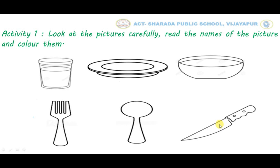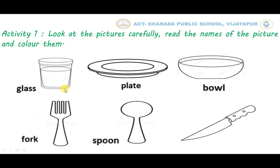Now tell me kids, what are the things we can see here? Yes kids, you are right. Here we can see a glass, plate, bowl, fork, spoon, and knife. In this activity you have to repeat the names of the things and color them.